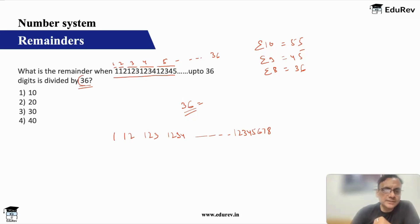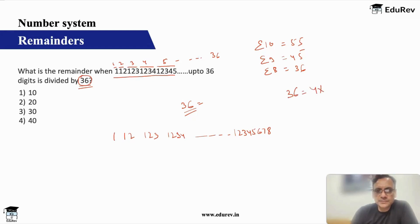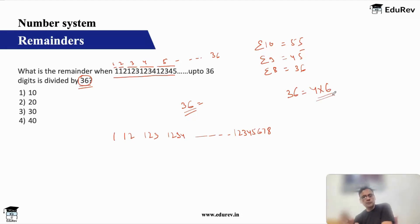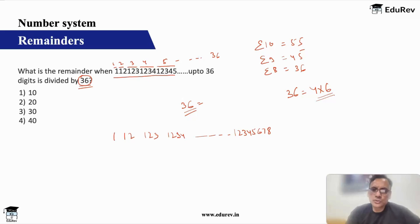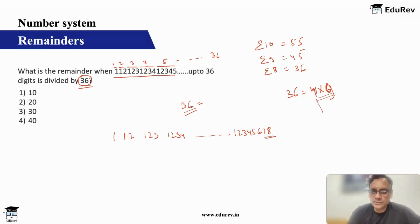36 means 4 times 9. So I'll apply the rule for 4 and the rule for 9, then apply my Chinese Remainder Theorem to combine them. For the rule for 4, you just have to check the last two digits, and the last two digits you see are 78. 78 divided by 4 gives remainder 2. So in case of 4, my remainder is going to be 2.